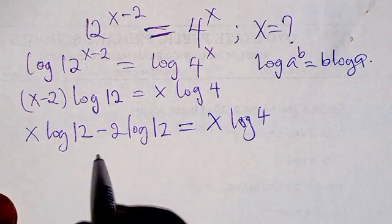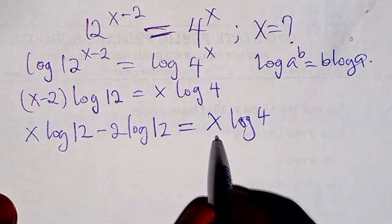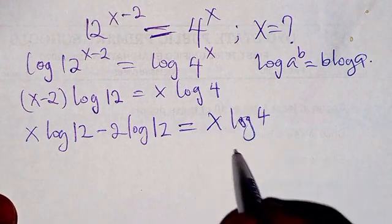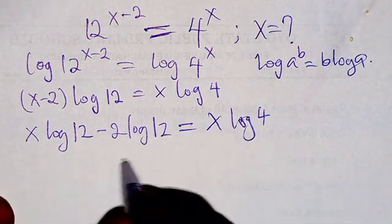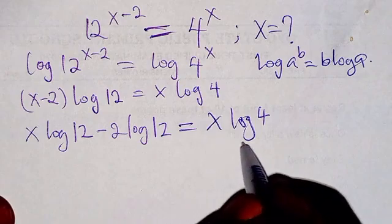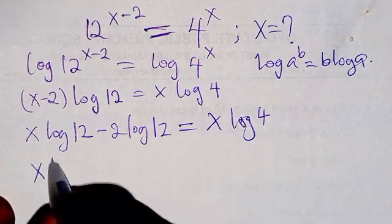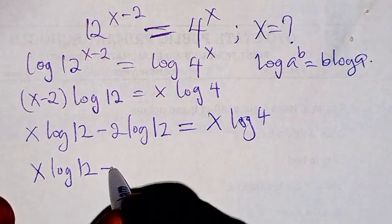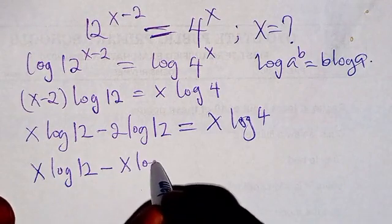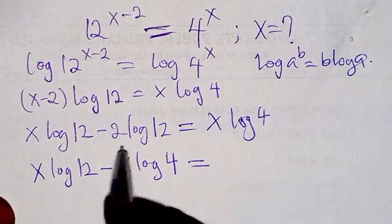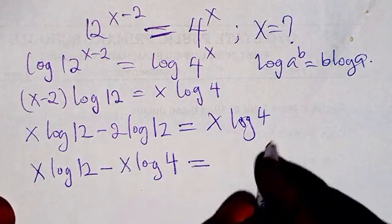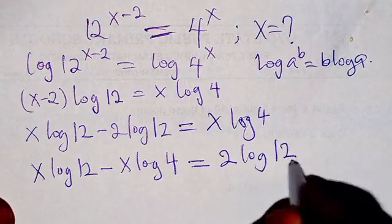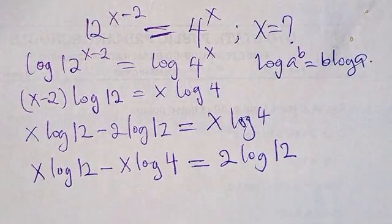We have x on both sides, so we are going to transpose the x log 4 term to the left hand side. We get x log 12 minus x log 4, and we transpose the 2 log 12 to the right hand side, giving 2 log 12. Are you following?